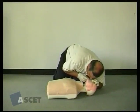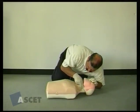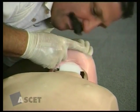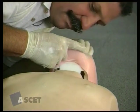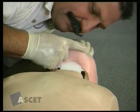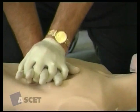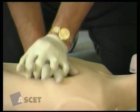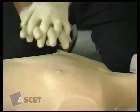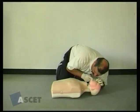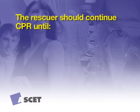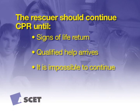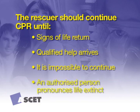Evidence has demonstrated that interruption of chest compressions is associated with poorer return of spontaneous circulation. Both lay and healthcare professionals experience difficulty in determining the presence or absence of a pulse. Therefore rescuers should minimise interruptions of chest compressions and CPR should not be interrupted to check for a pulse. If you have multiple rescuers, ensure one rescuer has contacted the emergency services, all equipment available has been obtained — that is, a defibrillator — and that rescuers frequently rotate, approximately every two minutes, to reduce fatigue. The rescuer should continue cardiopulmonary resuscitation until signs of life return, qualified help arrives, it is impossible to continue due to exhaustion, or an authorised person pronounces life extinct.